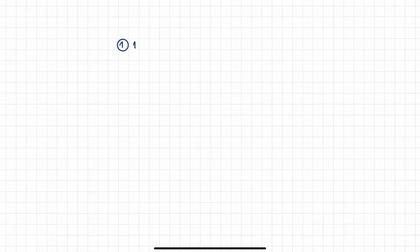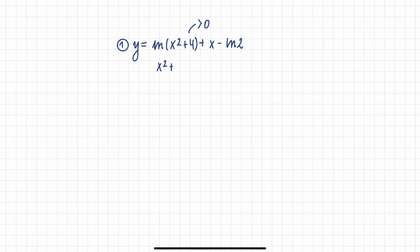Our second example is y equals the natural logarithm of x squared plus 4 plus x, minus the natural logarithm of 2. First, we need to determine the domain of the function. We know that the argument of a logarithm must be greater than 0, so x squared plus 4 must be greater than 0. Since x squared plus 4 is always greater than 0, the domain is all real numbers.